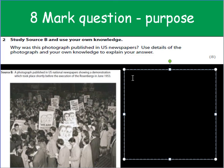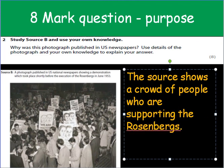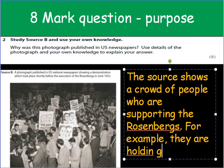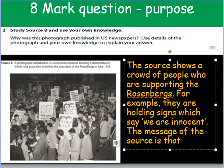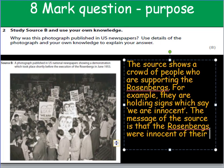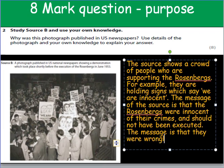In order to do this, we need to argue, first of all, what the source shows. The source shows a crowd of people, and they seem to be suggesting that the Rosenbergs are innocent — a crowd of people who are supporting the Rosenbergs. I need to pick an example from the source that backs this up. For example, they are holding signs which say 'we are innocent.' The overall message of the source is that the Rosenbergs were innocent of their crimes and should not have been executed — they were wrongly found guilty.